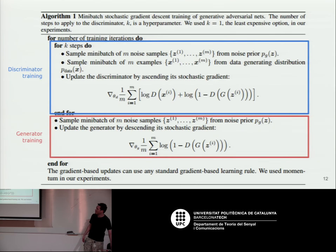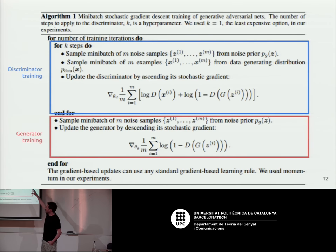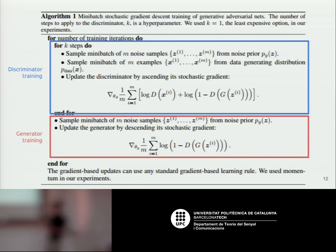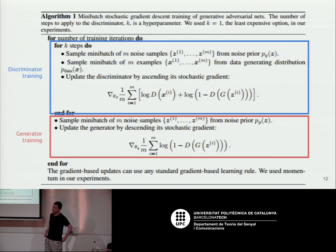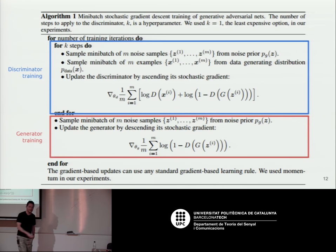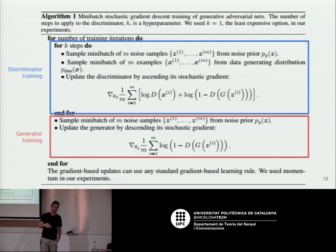The training algorithm from the paper has two parts: discriminator training and generator training. In discriminator training, you sample batches from the real world and from the generator, and apply a cross-entropy loss — the discriminator wants to say fake for generated samples and real for real ones. In generator training, you drop the real-world term and just backpropagate the remaining term to update the generator.